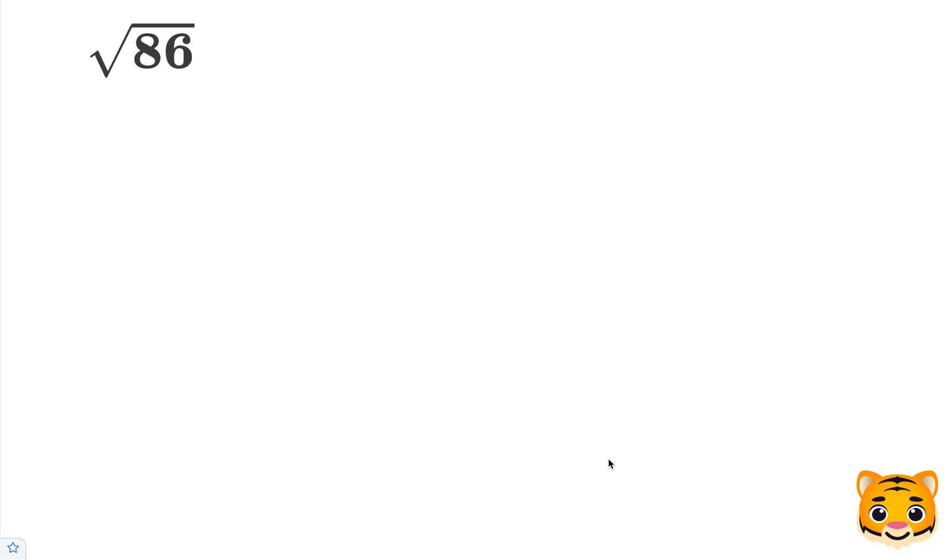In this example, we will be finding the square root of 86 by approximating it to the nearest tenth. Let's first find perfect squares nearby to 86. 9 squared gives us 81, 10 squared gives us 100.